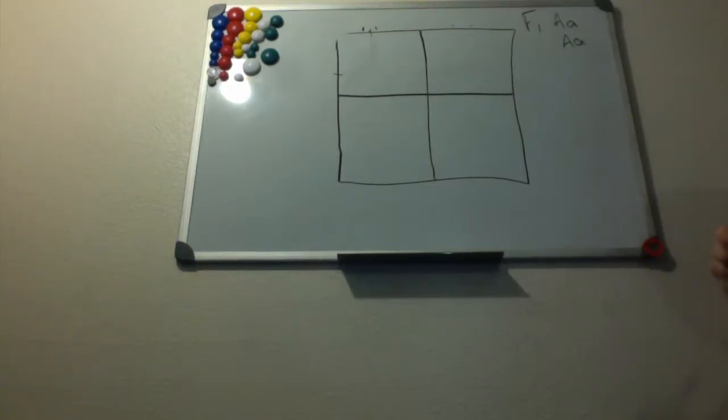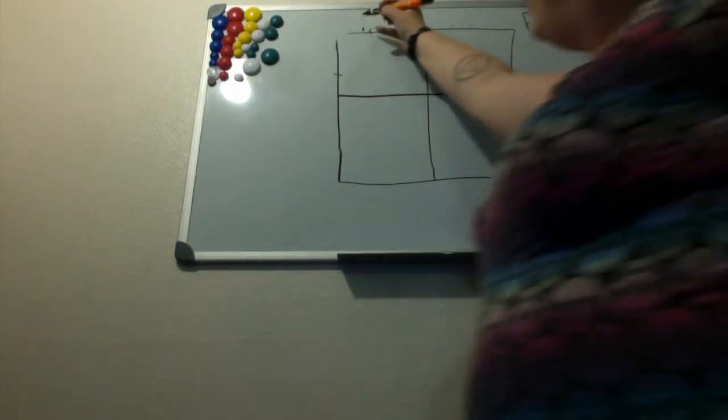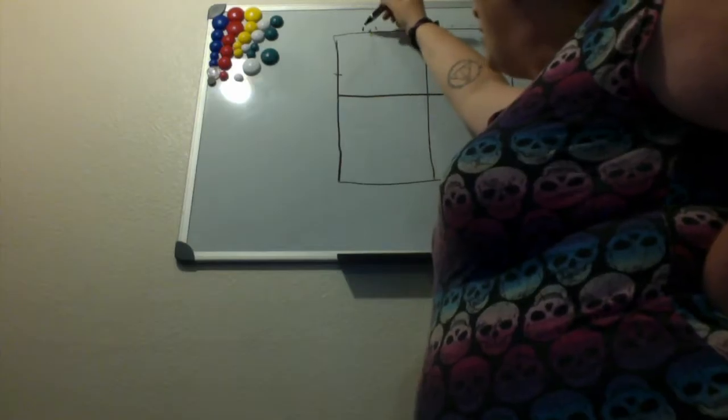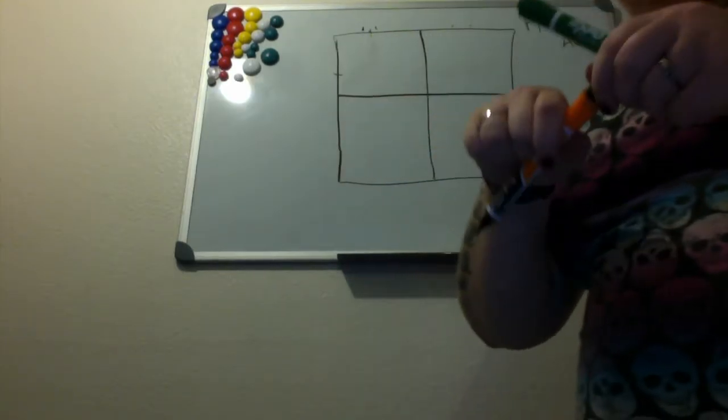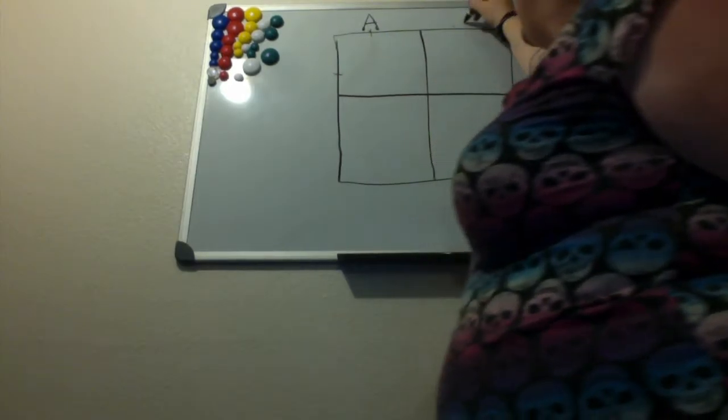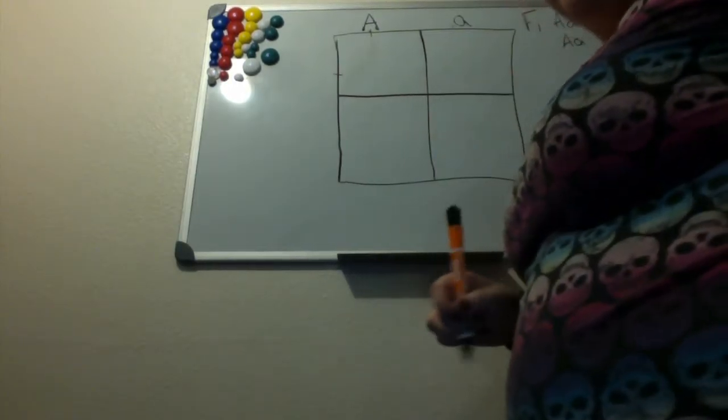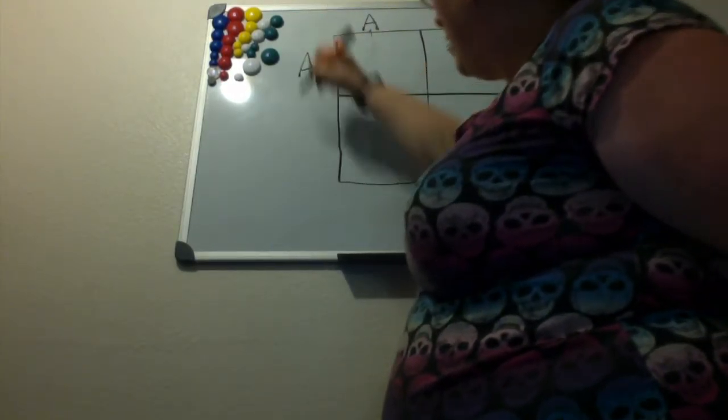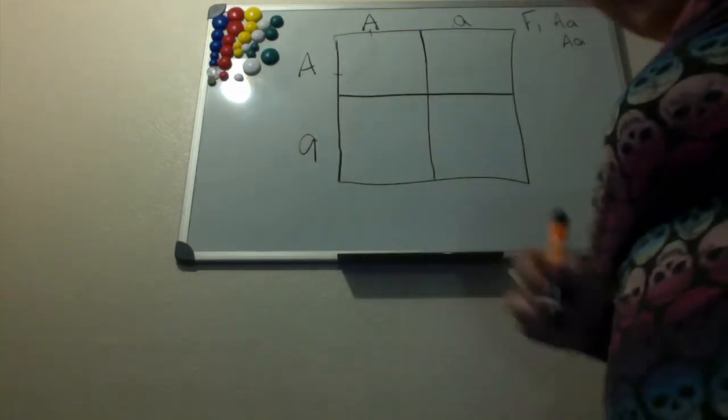I don't know if you can see that or not, but we'll go ahead and put it in our square. I'm going to use this color. We'll have one parent here dominant and recessive, one parent here dominant and recessive.